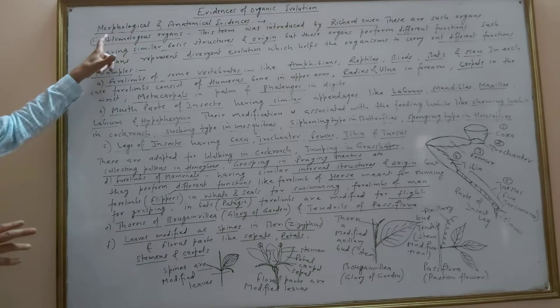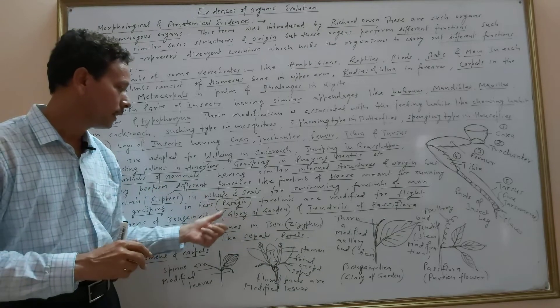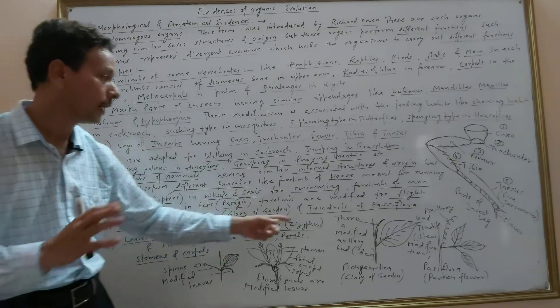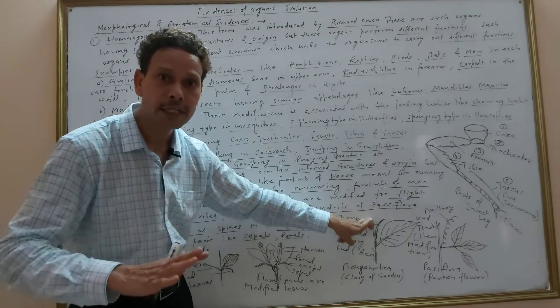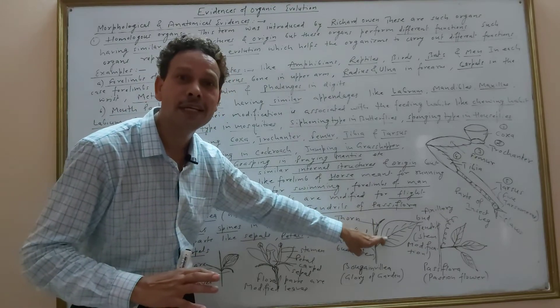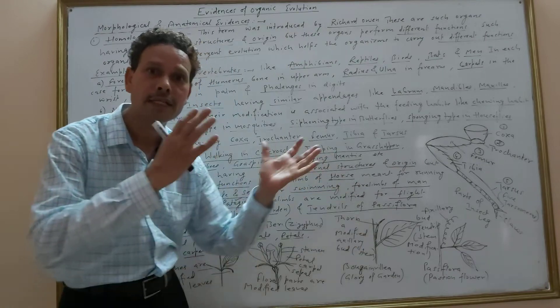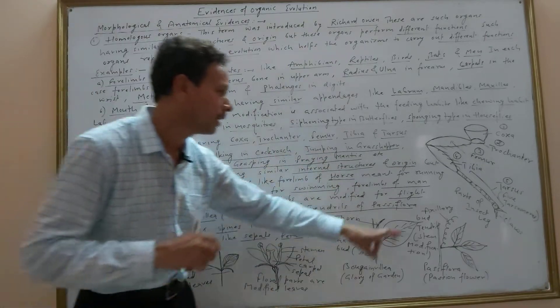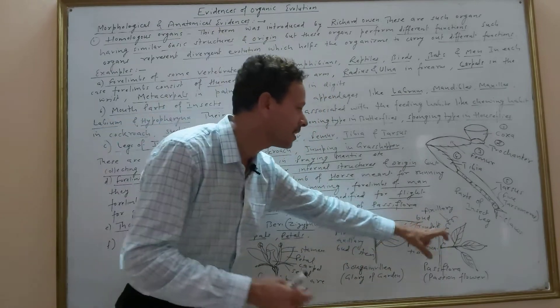Next example of homologous organs: thorns of Bougainvillea (glory of garden) and tendrils of Passiflora (passion flower). In case of Bougainvillea, this thorn is a modified axillary bud, a modification of stem. In case of Passiflora, the tendril thread-like structure is a modification of stem that gets modified into a tendril.